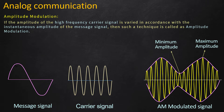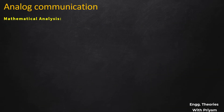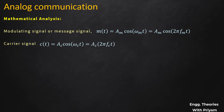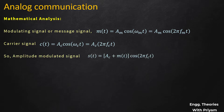Let's see the mathematical analysis of amplitude modulation. The modulating signal or message signal m(t) is equal to Am·cos(ωm·t), which can be written as Am·cos(2π·fm·t). The carrier signal c(t) is equal to Ac·cos(ωc·t), which equals Ac·cos(2π·fc·t). So the amplitude modulated signal s(t) is equal to [Ac + m(t)]·cos(2π·fc·t). Substituting m(t) = Am·cos(ωm·t), we get s(t) = [Ac + Am·cos(ωm·t)]·cos(ωc·t).